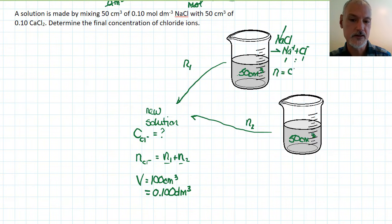And my concentration is 0.10, my volume when I convert it, dividing by 1000. Multiply those two together - that then gets me the number of moles: 0.0050 moles of chlorine ions from my first beaker.